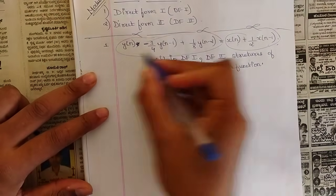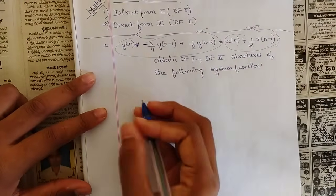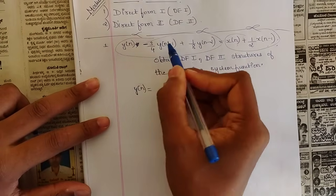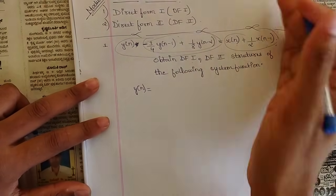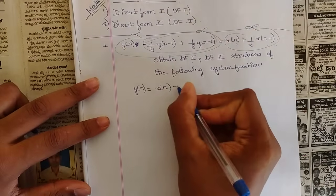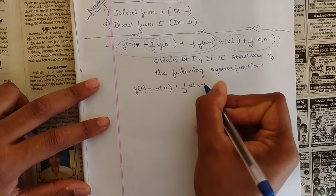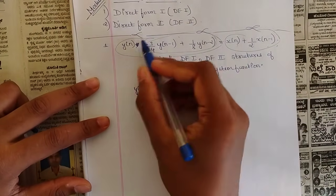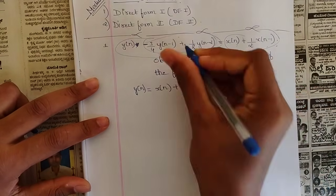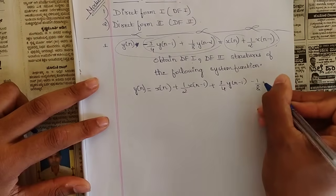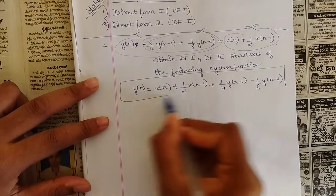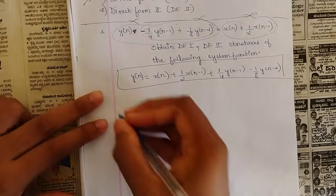First, let us isolate Y(n) on one side. Moving the other terms across, we get: Y(n) = X(n) + (1/2)X(n-1) + (3/4)Y(n-1) - (1/8)Y(n-2). Now Y(n) is on one side and all remaining terms are on the other side. We are ready to draw the Direct Form 1 structure.